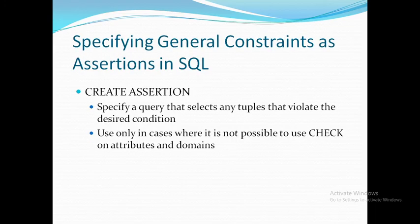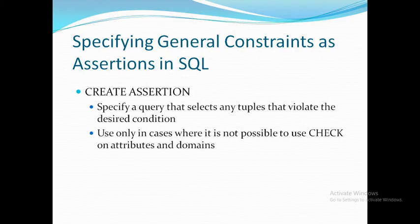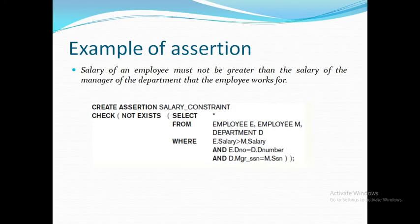To create an Assertion, you have to specify a query that selects any tuples that violate the desired condition. When writing the Assertion, you write a query specifying whenever a tuple violates some desired condition. Assertion is usually used when it is not possible to use the check constraint on attributes and domains — when in applications you want to put your own conditions which are not possible using check constraints.